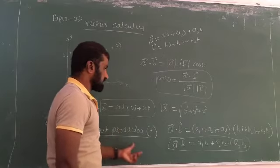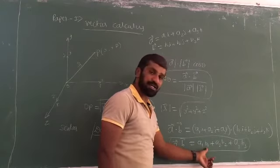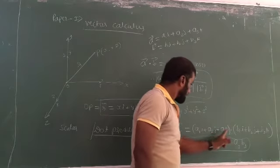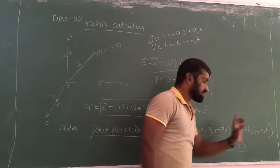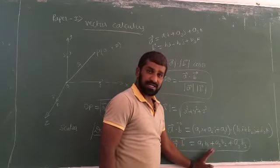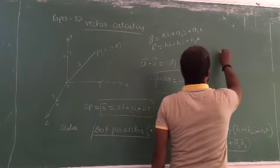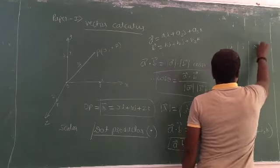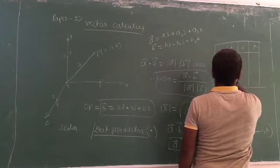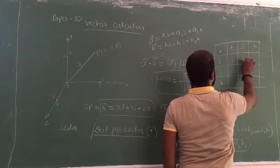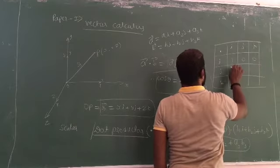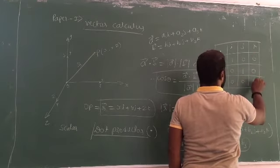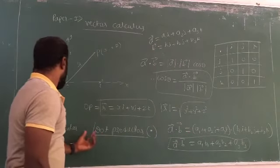The dot product values for unit vectors are: i dot i = 1, i dot j = 0, i dot k = 0; j dot i = 0, j dot j = 1, j dot k = 0; k dot i = 0, k dot j = 0, k dot k = 1. I can draw this as a table for the dot product of i, j, k. This is the basic concept of the dot product, also called the scalar product.